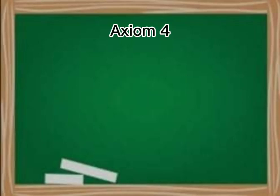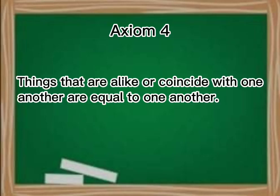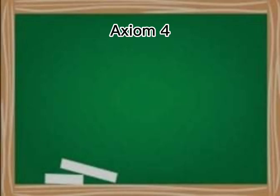Axiom 4: Things that are alike or coincide with one another are equal to one another. For example, segment AB is equal to segment BA.